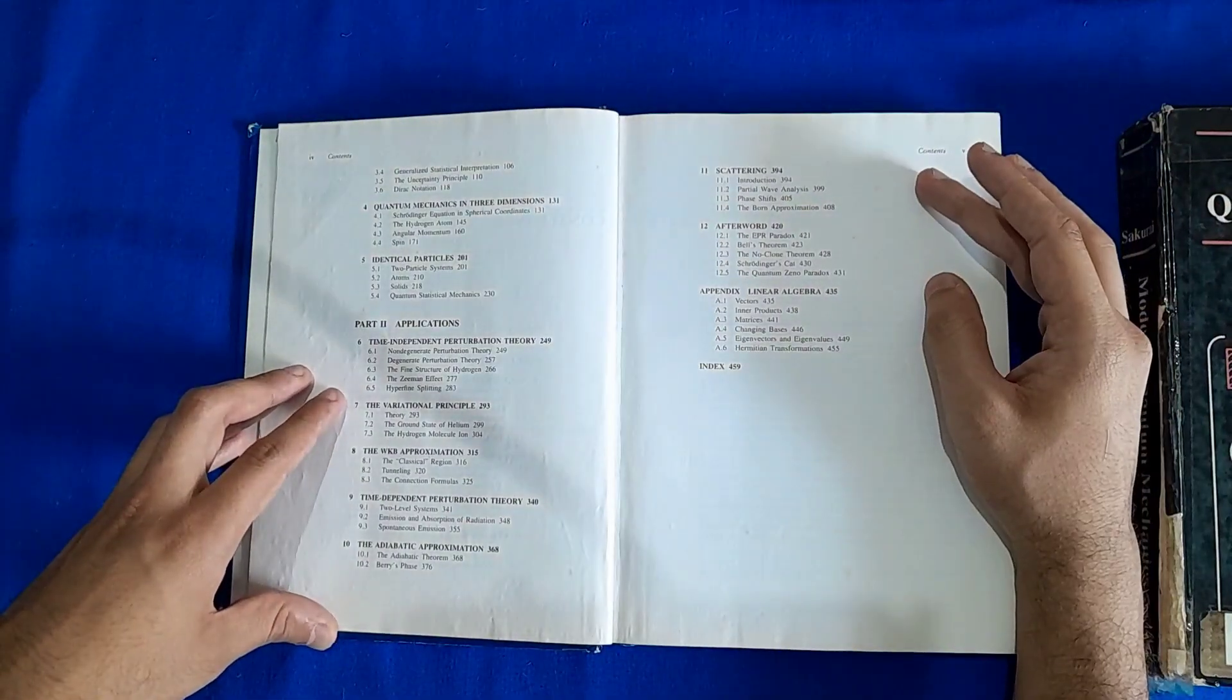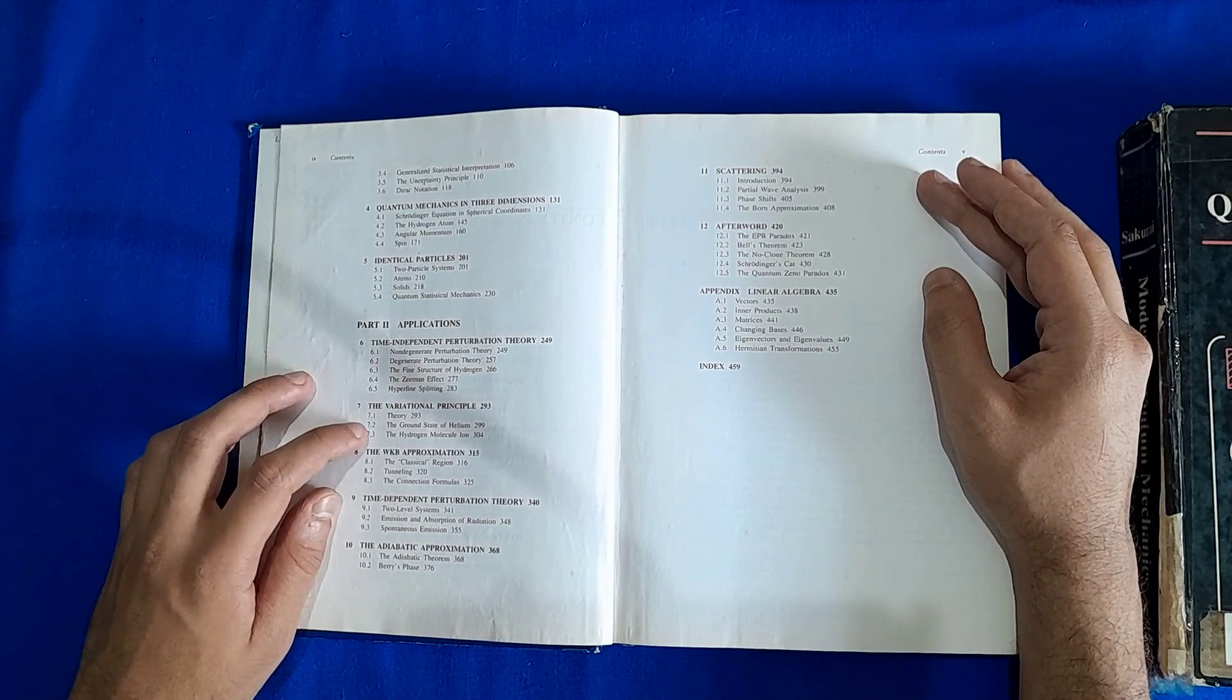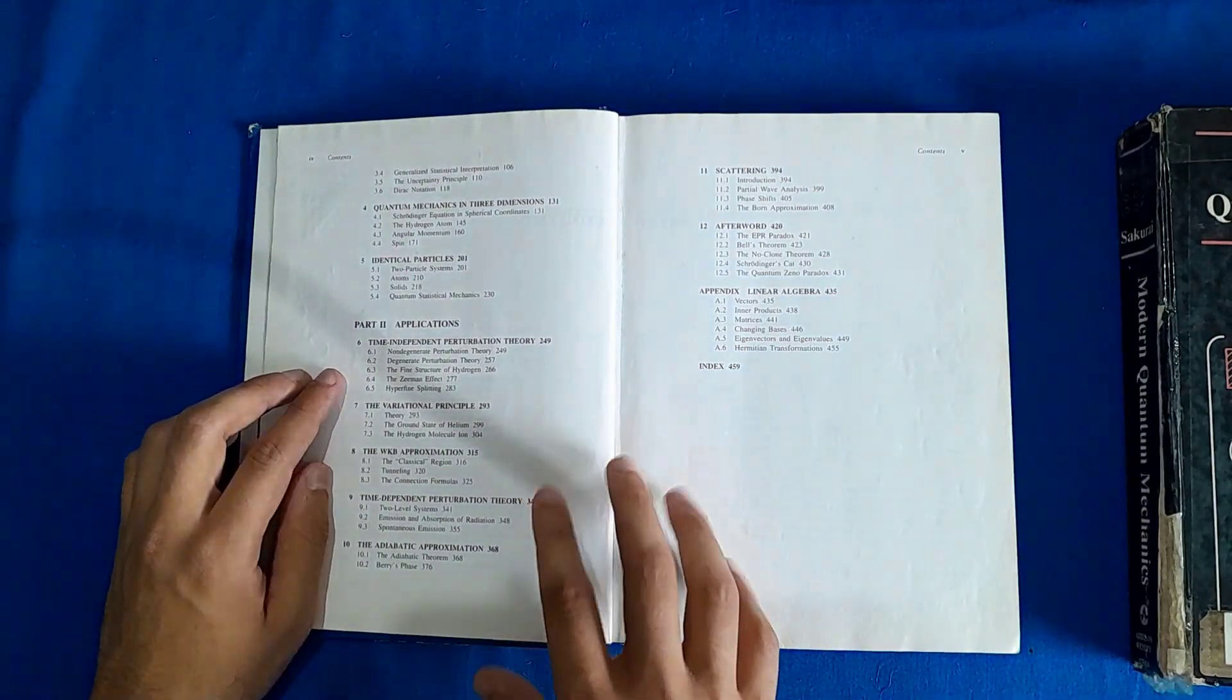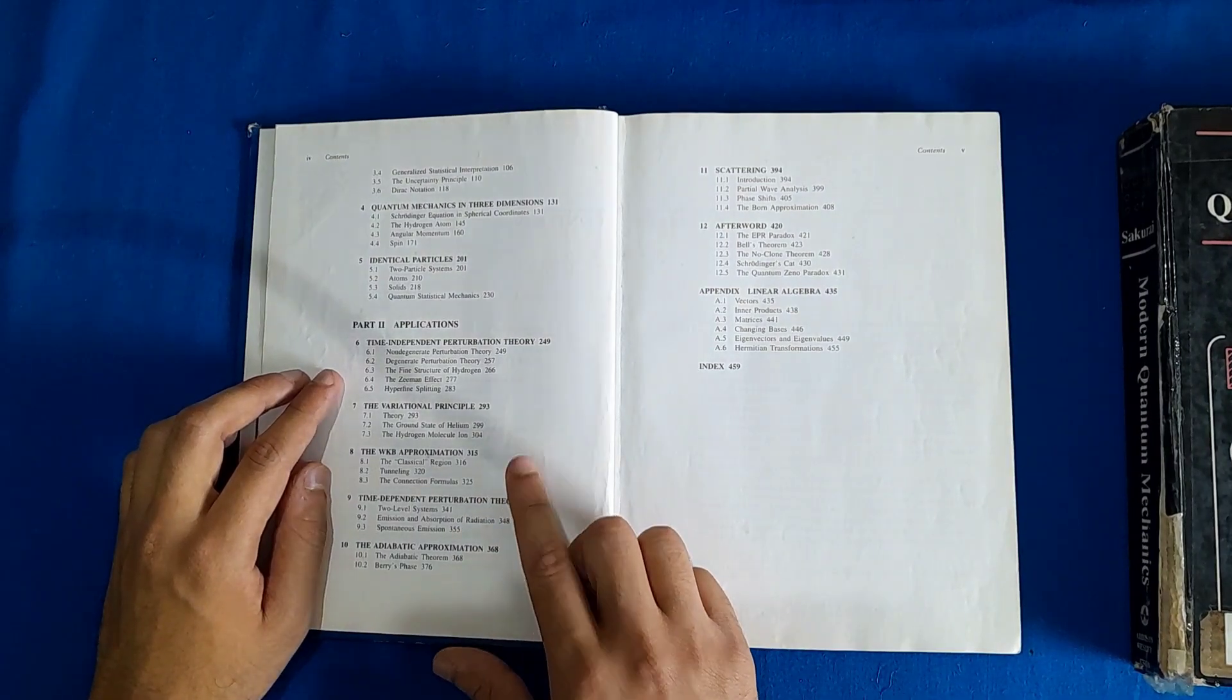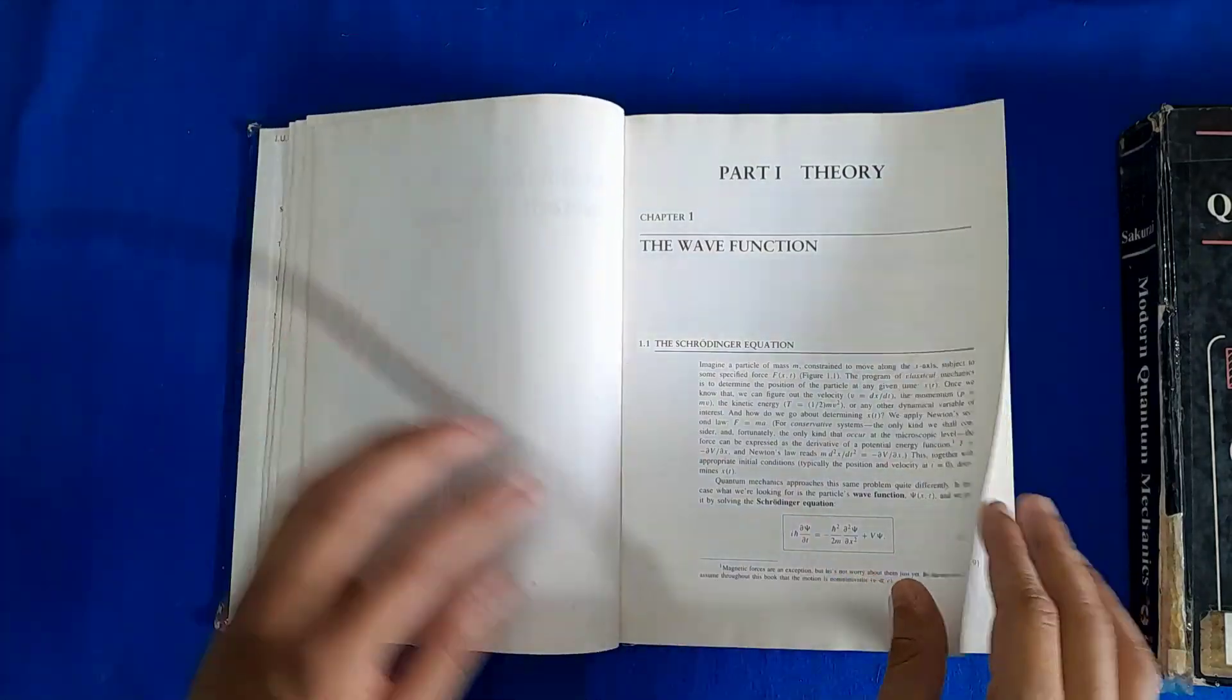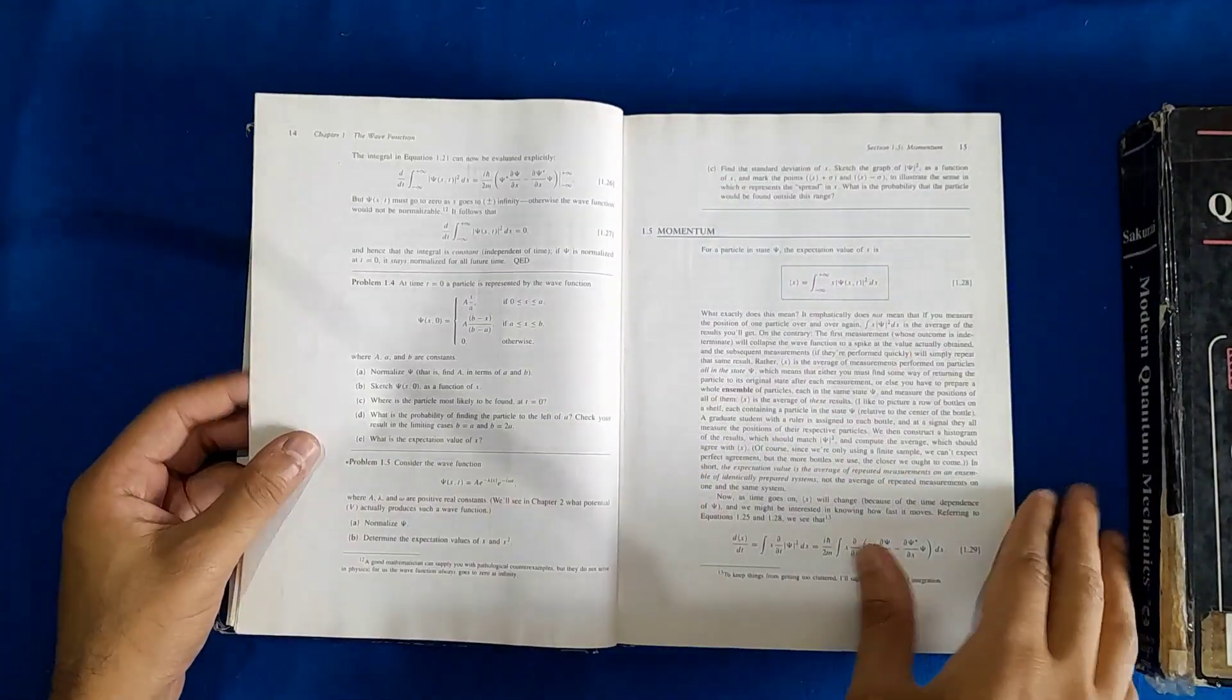So these are just theory, we are not actually applying it apart from the hydrogen atom or molecule here. We have time independent perturbation theory, variational principles and some approximation, WKB approximation, then time dependent perturbation, scattering and so on.